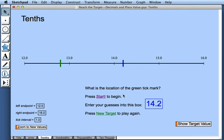I press start, I enter my guess, and the blue tick mark will scoot to whatever location I give it. And as before, I can change the left endpoint, the right endpoint, and the tick interval.